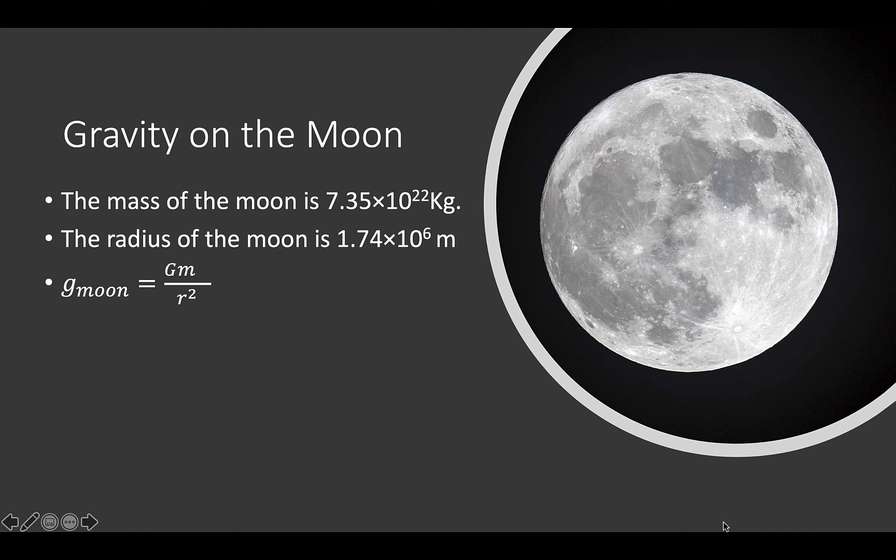Using gravity of the moon equals G m over r squared, we can substitute in the gravitational constant 6.67 times 10 to the negative 11, the moon's mass 7.35 times 10 to the 22, and the moon's radius 1,740,000 squared.